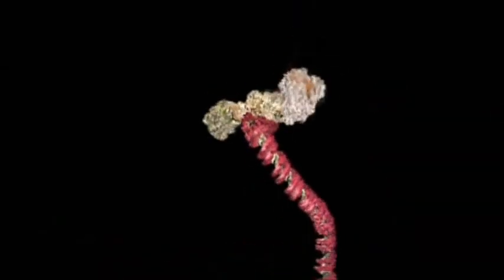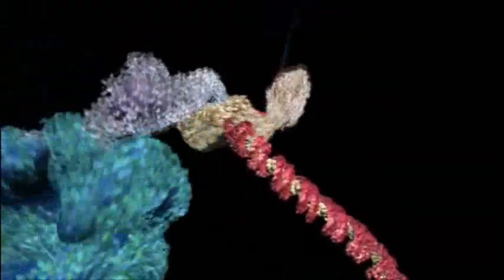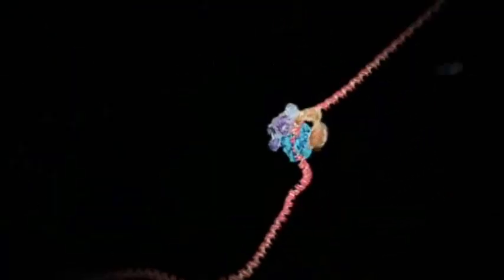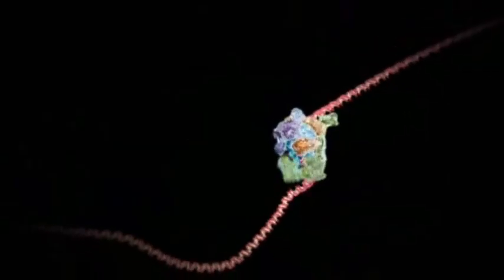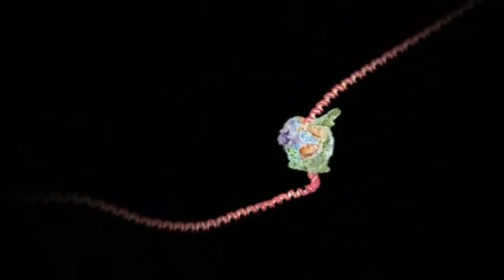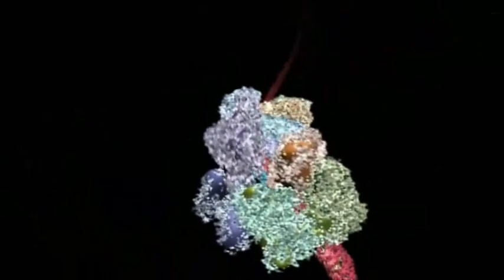It starts with a bundle of factors assembling at the start of a gene. It's these that trigger the first phase of the process, reading off the information that will be needed to make the protein. The gene is the length of DNA stretching away to the left. Everything's ready to roll.